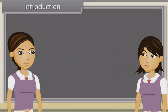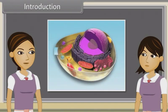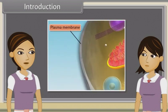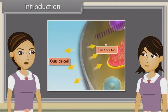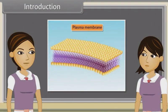We have discussed cell theory, structure and functional regions of cell, types of plant and animal cells, structure of plant and animal cells, prokaryotic cells and difference between plant and animal cells already. Now we will discuss structure of eukaryotic cells and also observe the structure and functions of cell membrane and cell wall.